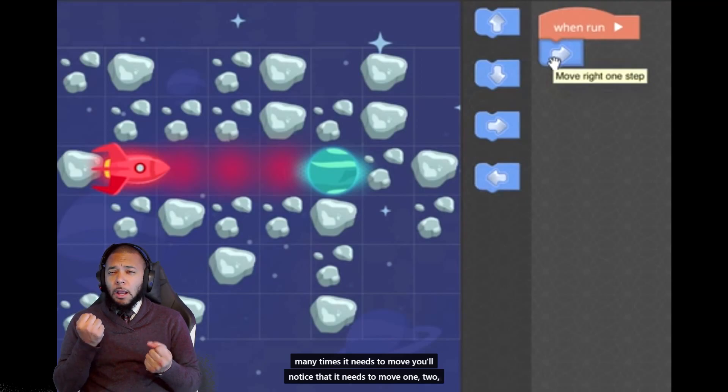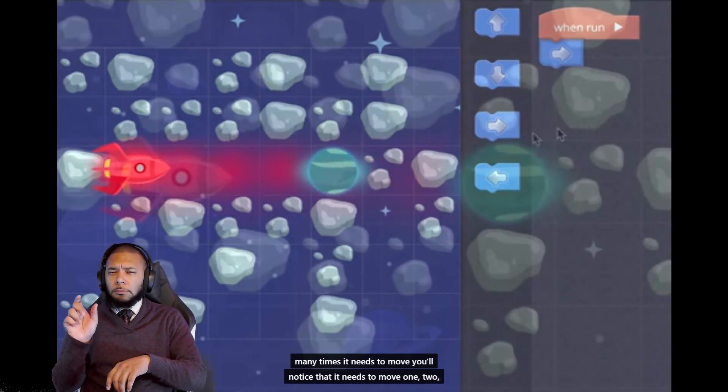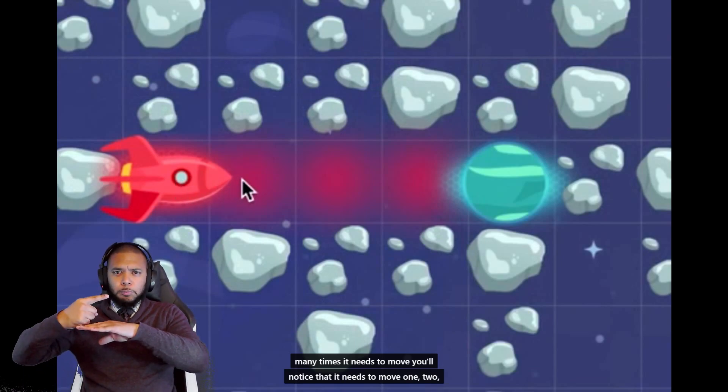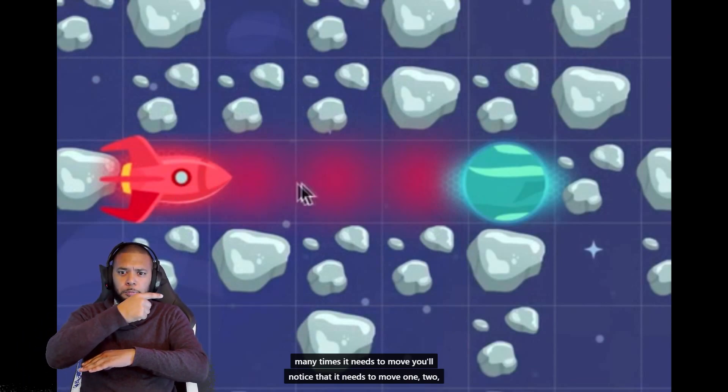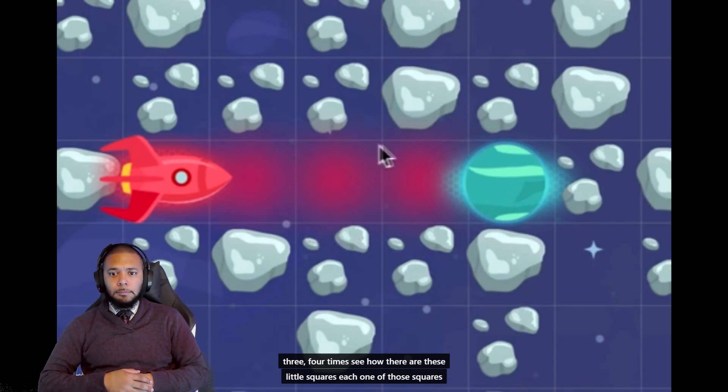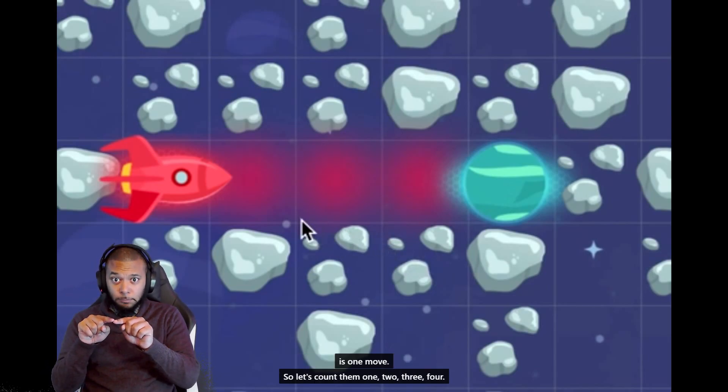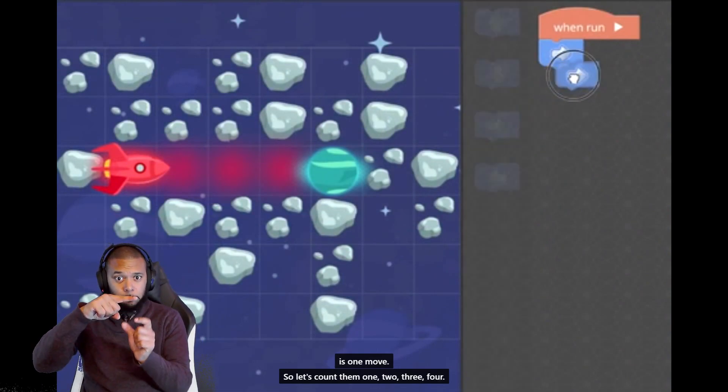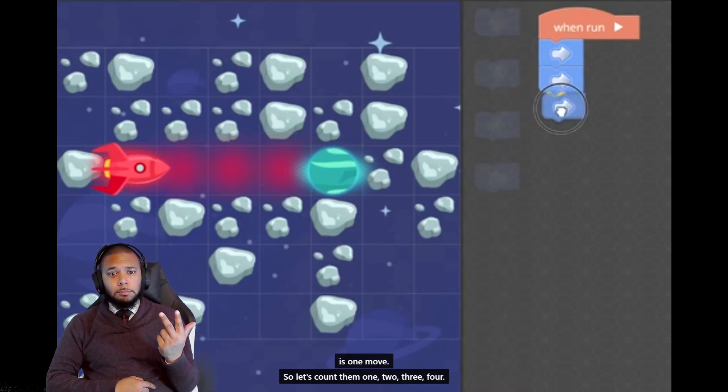You'll notice that it needs to move one, two, three, four times. See how there are these little squares? Each one of those squares is one move. So let's count them: one, two, three, four.